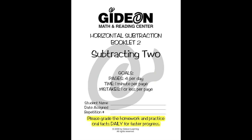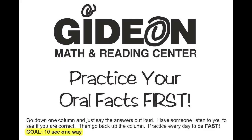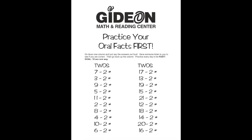Have your parents grade your homework and practice oral facts every day for faster progress. Practice oral facts before your work so your brain can warm up and so you will memorize your facts. To practice oral facts, go down one column and just say the answers out loud. Have someone listen to you to see if you are correct. Then go back up the column. Practice every day to be fast. Your goal is to go one way in 10 seconds. Do both columns.